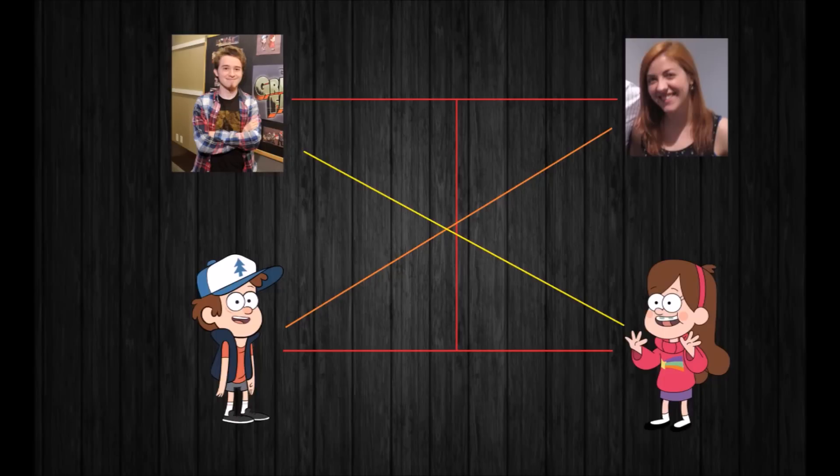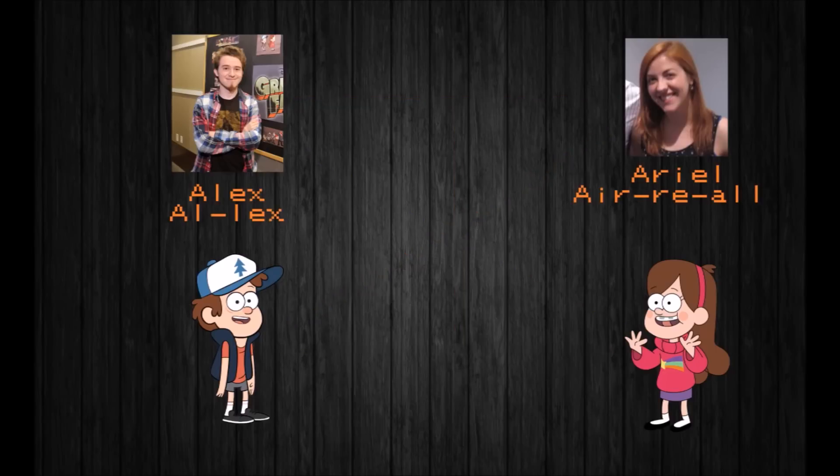By taking a look at the people that are based off of the characters Dipper and Mabel Pines—if we look at Ariel and Alex Hirsch's names to find a few similarities between them, and then transferring those similarities to Dipper and Mabel, we can actually find a few pretty interesting similarities that can help lead us to figuring out Dipper's real name.